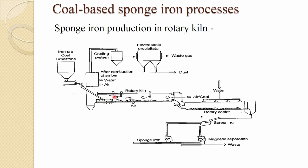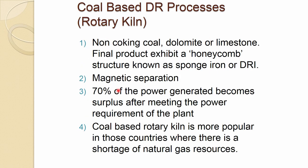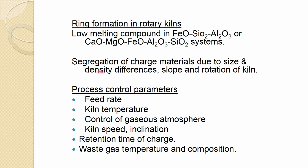Segregation occurs because there is no close control on particle size distribution, affecting the reaction. Process control parameters for the rotary kiln include: feed rate, kiln temperature, control of gas atmosphere, kiln speed, inclination, retention time of the charge, and waste gas temperature and composition.